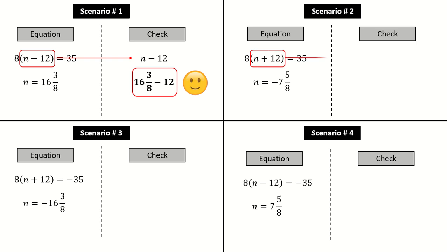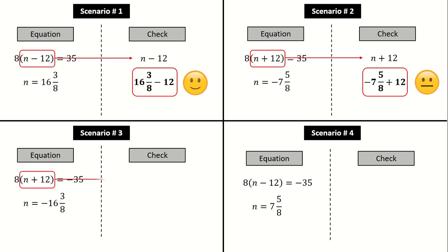In scenario number two, we have a negative mixed number adding a positive number where we go from the negative domain — and even though we don't go from one domain to the other, this one can be tricky as well.